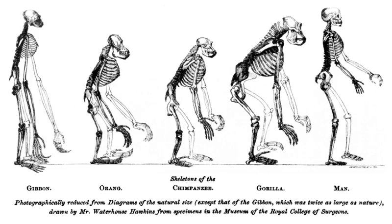However, viable hybrids are occasionally formed, and these new species can either have properties intermediate between their parent species, or possess a totally new phenotype. The importance of hybridization in creating new species of animals is unclear, although cases have been seen in many types of animals, with the gray tree frog being a particularly well-studied example. Hybridization is, however, an important means of speciation in plants, since polyploidy — having more than two copies of each chromosome — is tolerated in plants more readily than in animals.